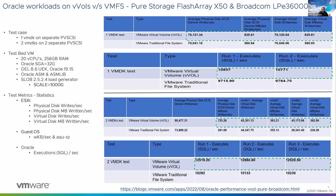Customers have been asking about workload performance, so this is a test we did when we ran our Oracle workloads on VVOL versus VMFS. The storage in question was a Pure Storage FlashArray X50 with ESXi servers and a Broadcom LPE 36000 HBA. We had one VMDK on a separate PVSCSI controller from the other database component. The second test case was two VMDKs on two separate PVSCSI controllers. The ask was: let's put that on VVOL, let's put that on VMFS, run our workload, and look at metrics from an ESXi perspective, guest OS perspective, and Oracle perspective.